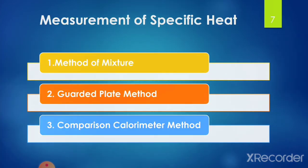Regarding the measurement of specific heat: the specific heat of agricultural produce is measured by three methods. The first method is the method of mixture, the second is the guarded plate method, and the third is the comparison calorimeter method. We will see these methods one by one.